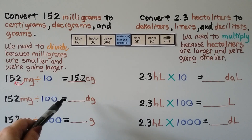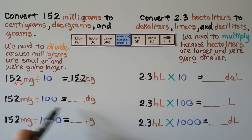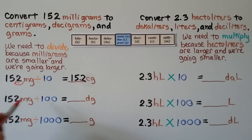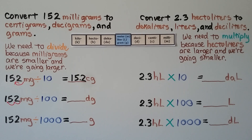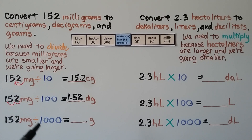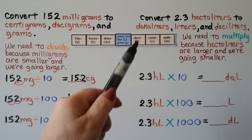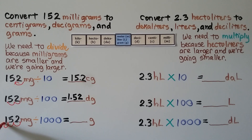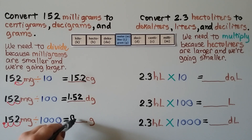To convert to decigrams, we divide by 100 because we're going from milli to deci — that's 2 powers of 10. The decimal point moves 2 hops: 1, 2 — going between the 1 and the 5. That gives us 1 and 52 hundredths decigrams. To convert to grams, we go from milli 1, 2, 3 powers of 10, so we divide by 1,000. The decimal point moves 3 hops to the left of the 1, and we put a 0 in the ones place — giving us 0.152, or 152 thousandths grams.